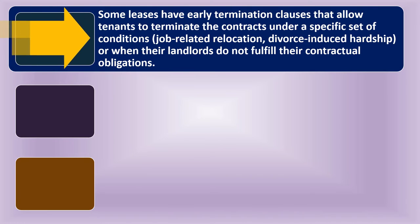Some leases have early termination clauses that allow tenants to terminate contracts under specific conditions — such as job-related relocation, divorce-induced hardship, or when landlords do not fulfill their contractual obligations. If you're moving due to job relocation and there's a clause for that, great. Proving the landlord didn't fulfill obligations may be more difficult, though if maintenance is genuinely neglected, that's a stronger case, possibly requiring a lawyer.